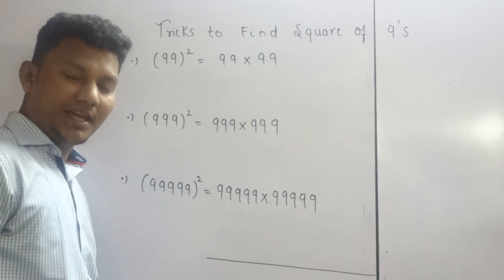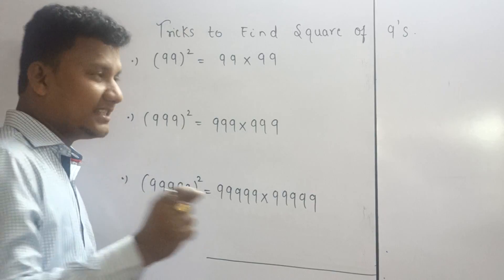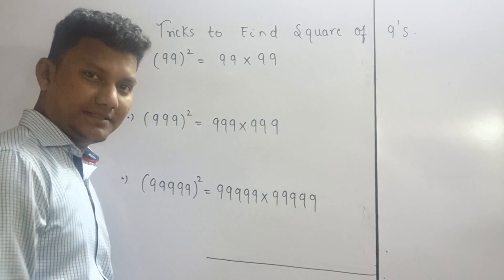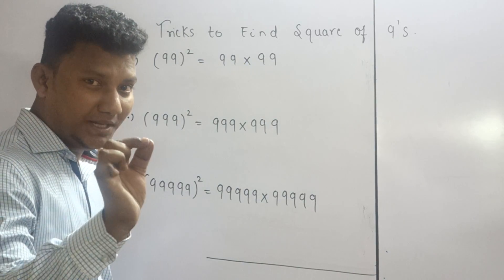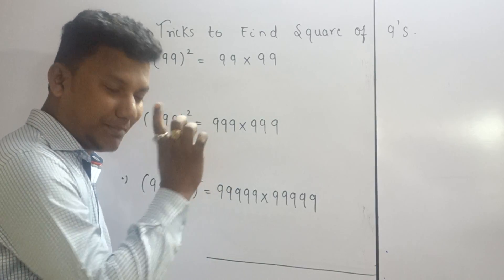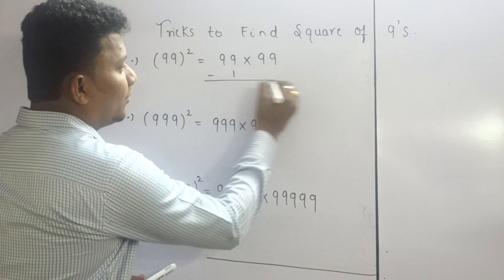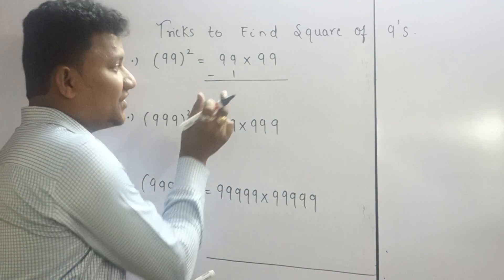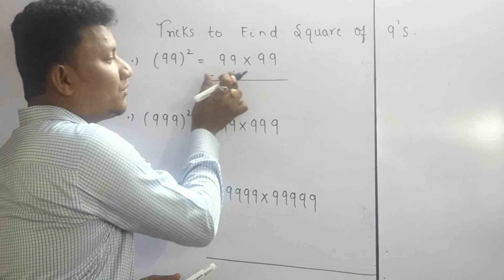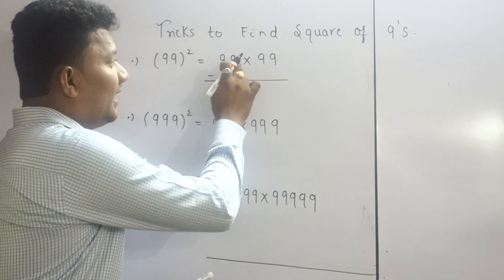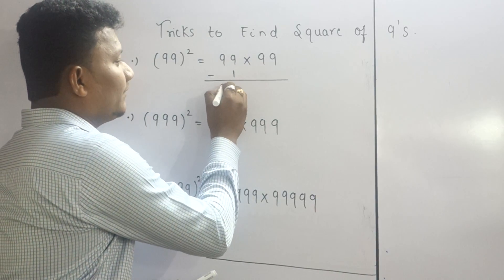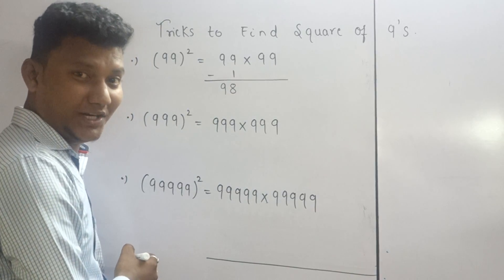99 square. Can I write this as 99 into 99? Yes. Now simply follow the instruction. Minus 1 to the first section. Always do minus 1 to the first section. So what do we get? 99 minus 1, that is 98. Understood?